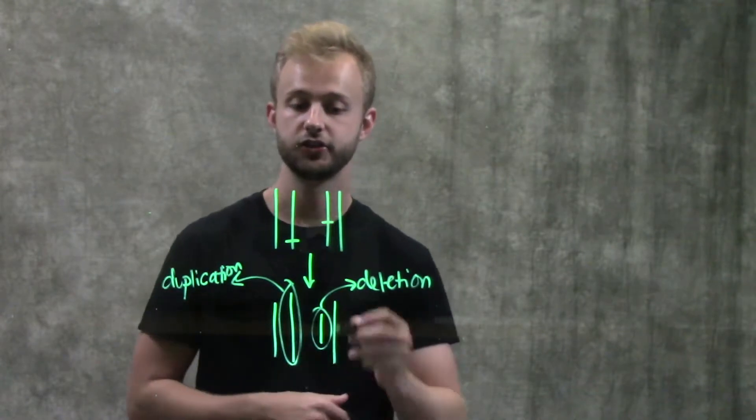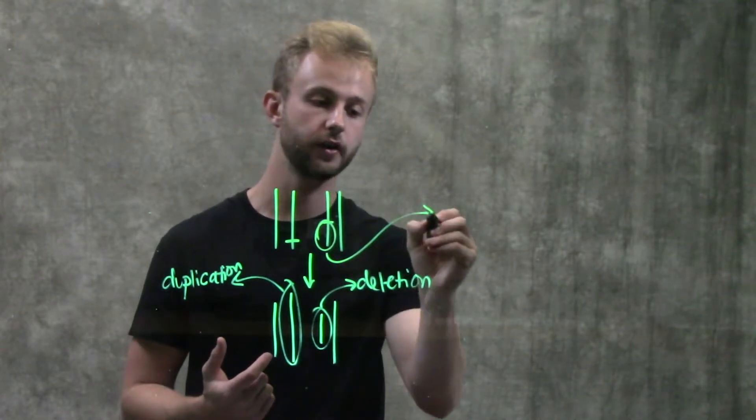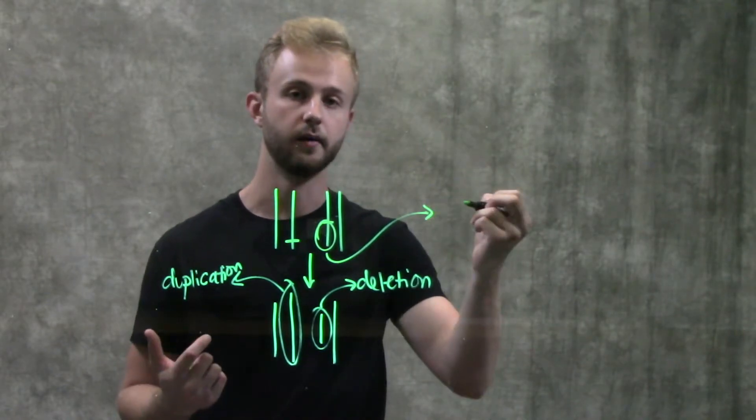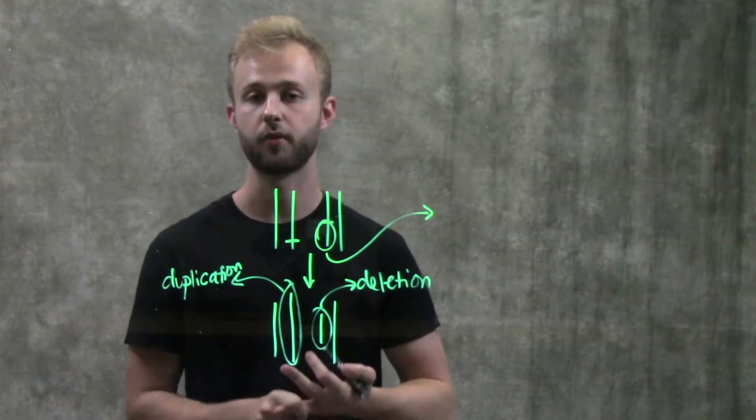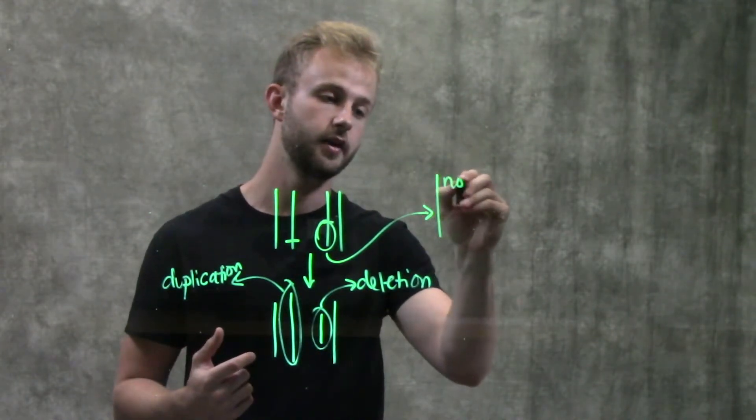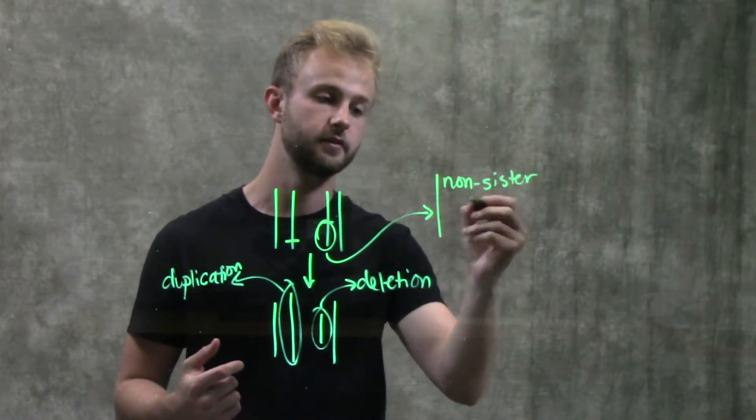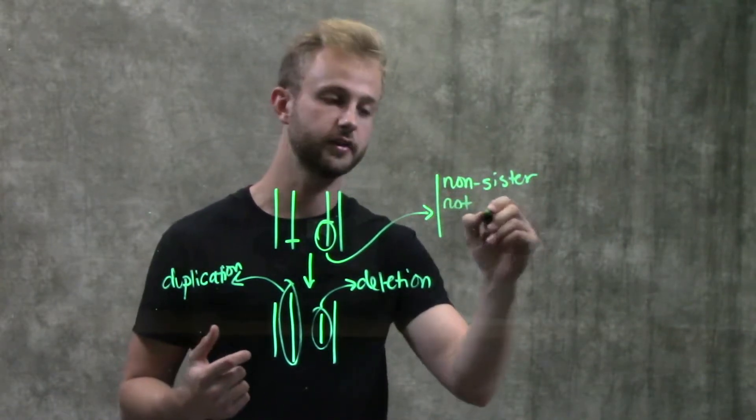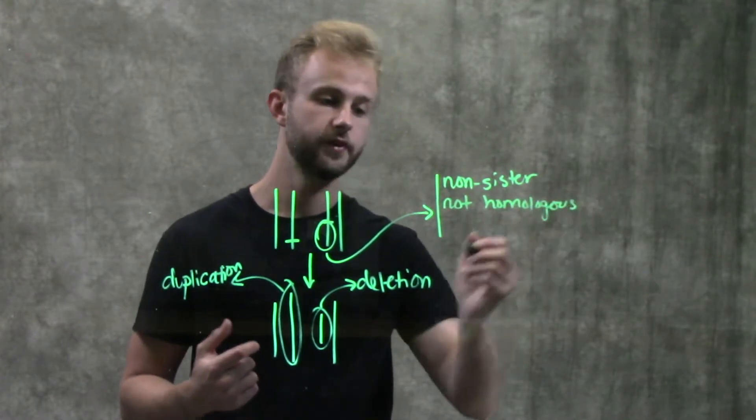But also when we have a deletion we can have this deleted portion going over and attaching to another chromosome that's not a sister chromatid and it's not part of their homologous pair. When we have it attaching to a non-sister chromatid that's not in a homologous pair, that is called a translocation.